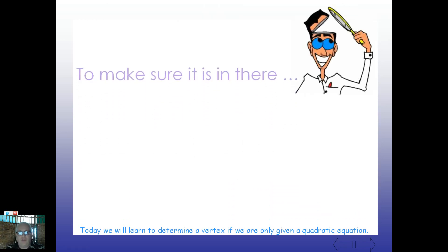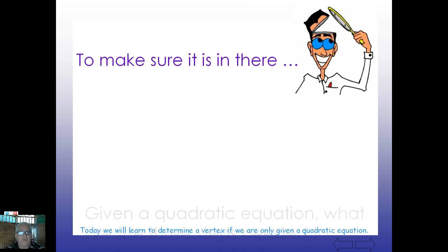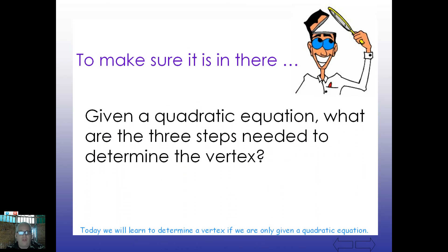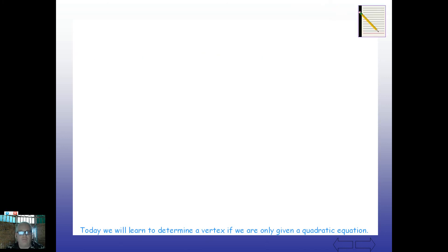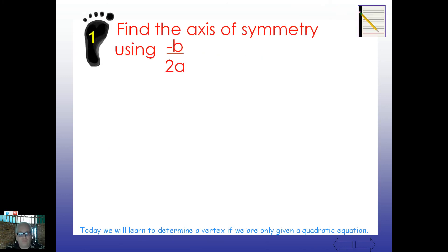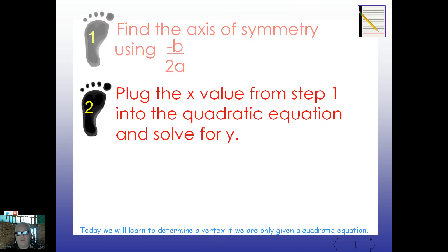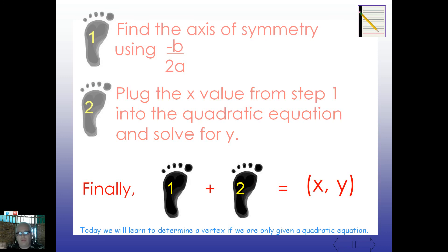All right, then. Let's review real quickly. Given a quadratic equation, what are the three steps needed to determine a vertex? Step 1, use negative B over 2A. Step 2, take that value you found, plug it back into the original equation, solve for Y. Step 3, put the two together.